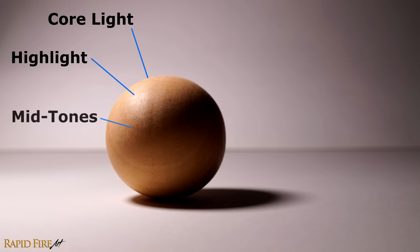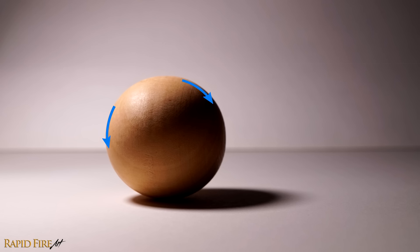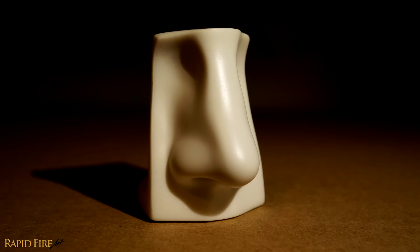The very last thing are mid-tones, or half-tones. Mid-tones are the darkest values on this side of the ball, where the edges start curving away from the light source. These areas receive less and less light the more they angle away. Can you point out the core light, highlight, and mid-tones on the nose?